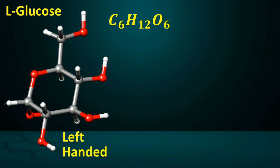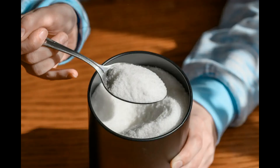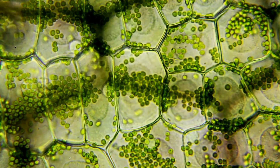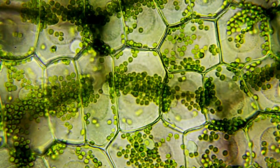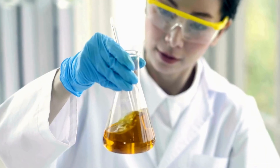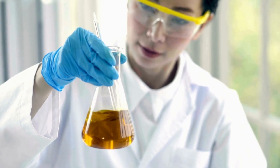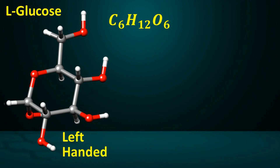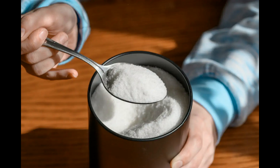This raises the question: if L-glucose is sweet but cannot be metabolized, could it be used as a low-calorie sweetener? Theoretically, yes. But there is a problem. Unlike D-glucose, which plants can naturally produce, no plants or organisms produce L-glucose. It has to be synthesized artificially in a lab, which is a very expensive process. Moreover, we do not know if L-glucose has any other side effects. That is why it has not been developed or used as a sweetener.